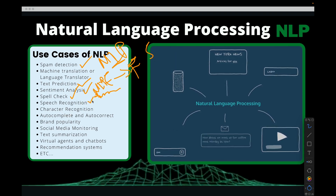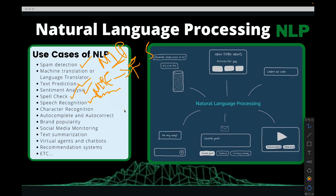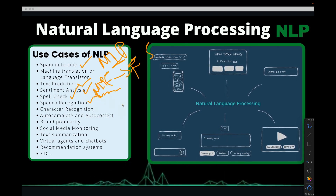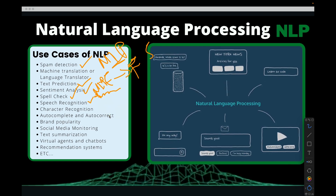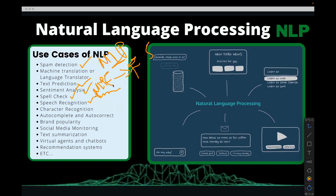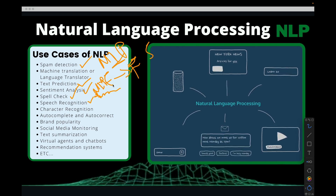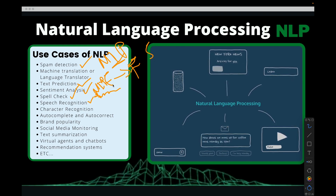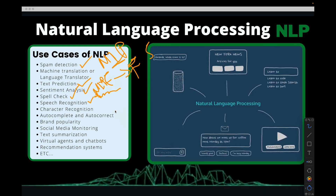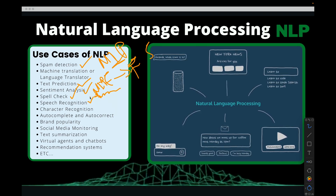Speech recognition — you want to identify who spoke certain words, whose voice it is. This happens mostly in law court when they want to identify who spoke certain words as evidence in a case. The person being charged will deny it's their voice, and in that case you need natural language processing to decipher whose voice it is.